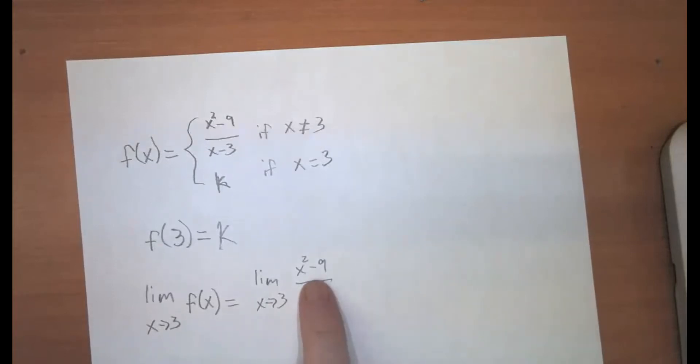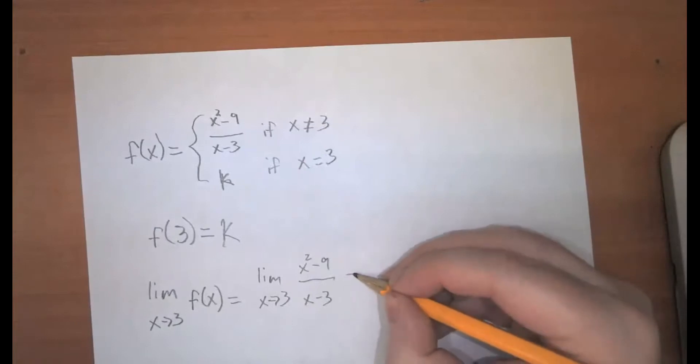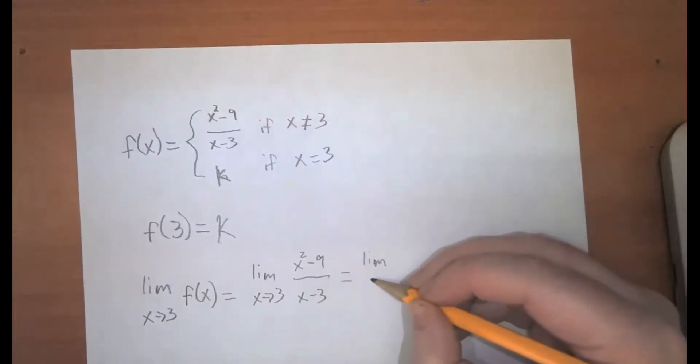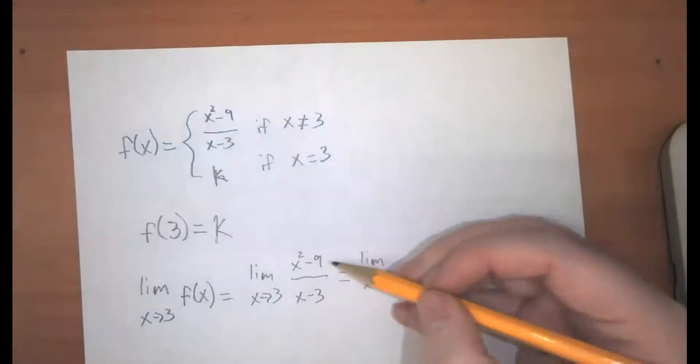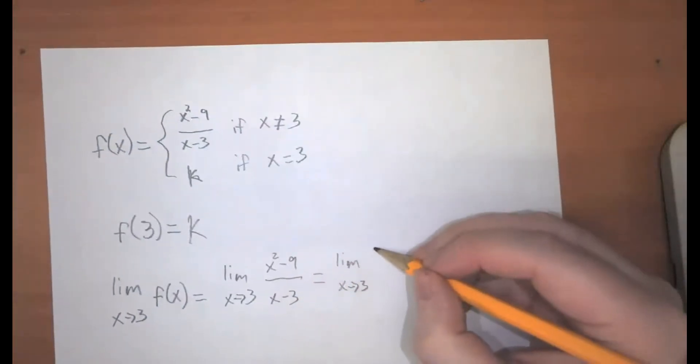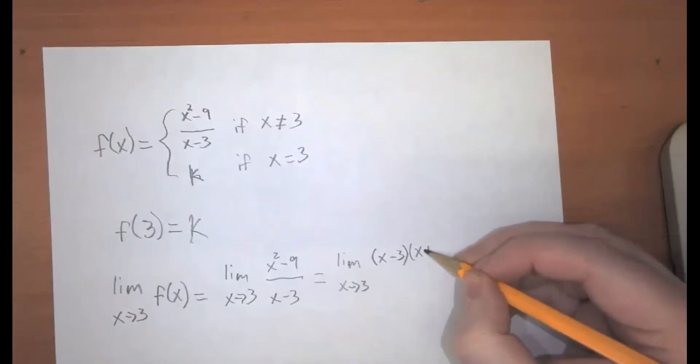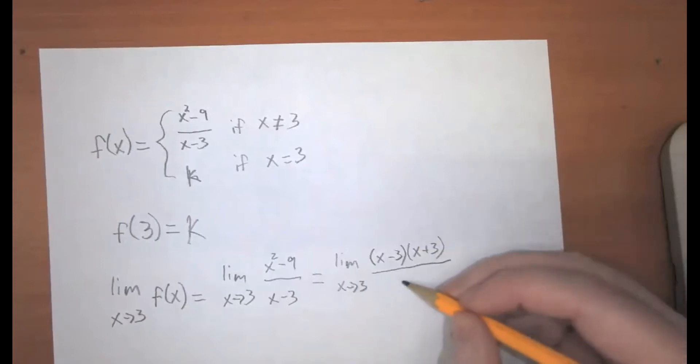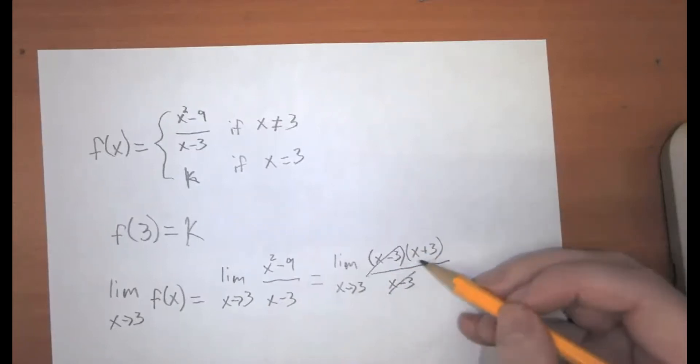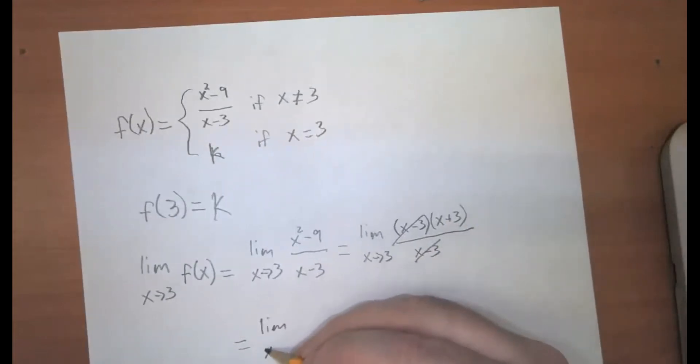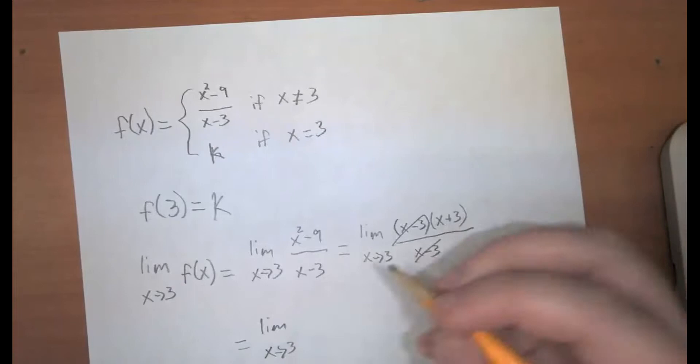So this is a quadratic expression. So let's see if we can factor it. That not only is it a quadratic expression, but it's the difference of two squares. So hopefully, you're getting stronger at recognizing that x minus 3 times x plus 3 over x minus 3. And those two values cancel out, so we've got the limit as x approaches 3 of x plus 3.